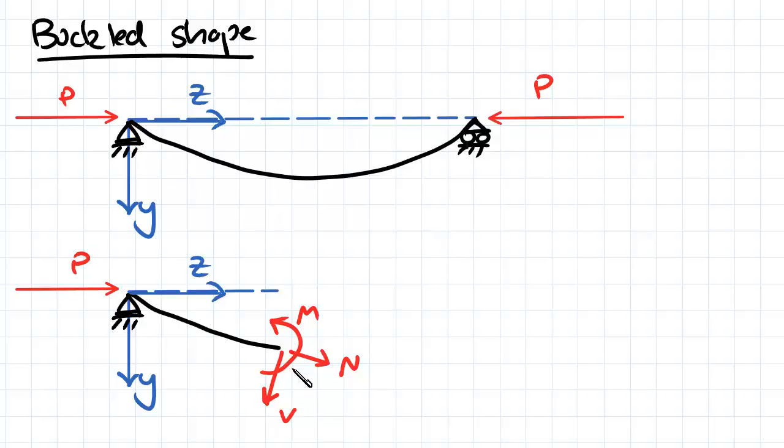So the moment M, if I just take equilibrium about this point, I'll find the moment M is equal to P Y. So P and we've got a moment arm of Y.